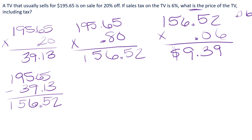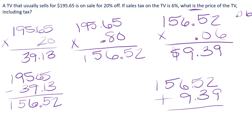Now that's not the total. You have to take the price of the TV and add that sales tax on so that you can get your total amount that you're going to pay. And you will pay $165.91.